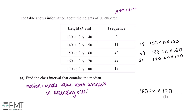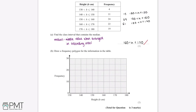This question is worth one mark, and that's for the correct answer. The next question asks us to draw a frequency polygon for the information in the table. On the x-axis we have the height of the children and on the y-axis we have the frequency. An important thing to remember for frequency polygons is that because the heights are in a class interval, we're going to want to take the midpoint of that interval.